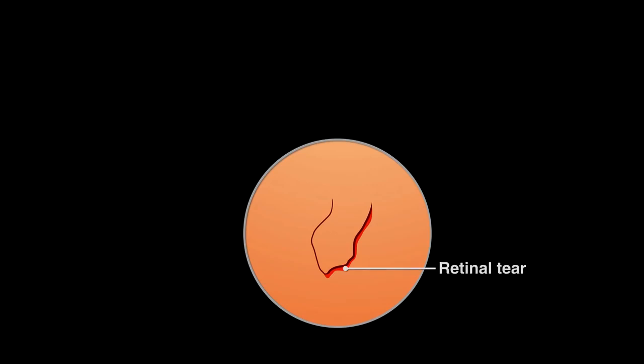Injury can cause the eye's retina to peel away from the tissue supporting it. Without rapid treatment, the entire retina can become detached, causing blindness.